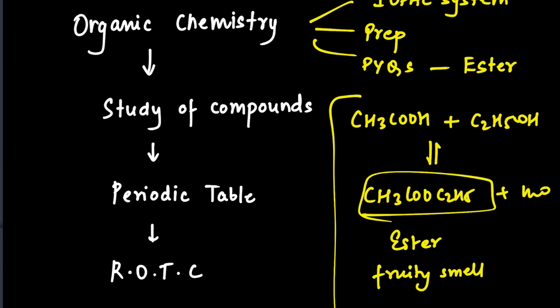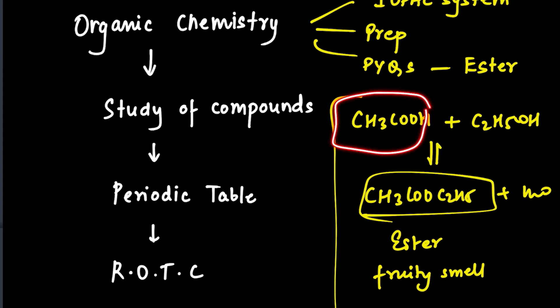Now board frames a number of questions with this particular reaction. If you guys have studied it properly you'll be able to tackle all the questions. They may ask you mention the reactants which are involved in making of a compound that has fruity smell, or they may ask what is formed when acetic acid and ethyl alcohol react, what is the smell of it.